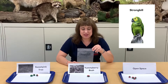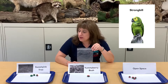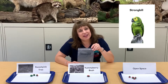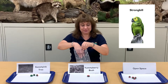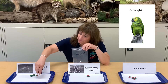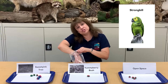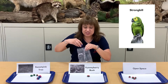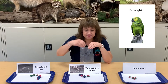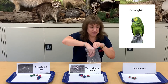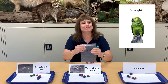Now let's pretend to be the strongbill. We know that this bird eats both the sweet pink and the yummy berry fruits. So let's fly around and see what happens. We're going to visit the sweet pink tree and also the yummy berry bush, because that's a good place to land. And open space — yeah, we have to go there too, this bird will fly around everywhere.